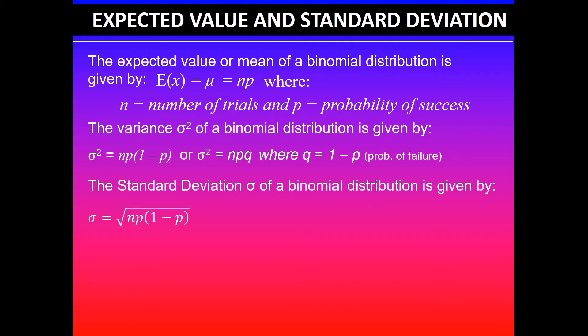The standard deviation σ of a binomial distribution is given by the square root of variance. So in this case it will be σ = √(np(1-p)) or σ = √(npq).